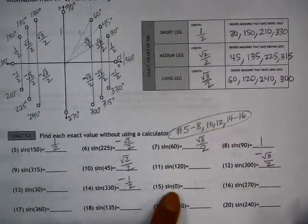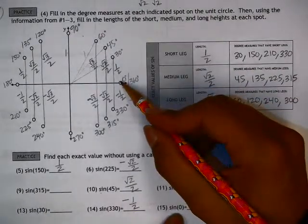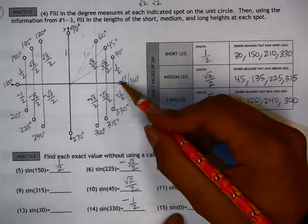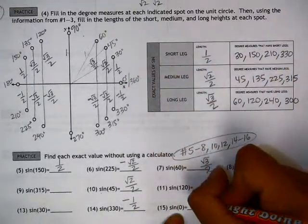And then, looking at sine of 0. So, at 0 degrees, we are right here. We are on the x-axis, so the height above the x-axis would just be 0. So, this would be a 0.